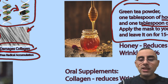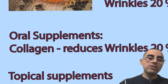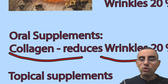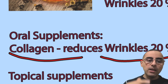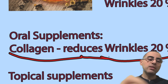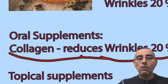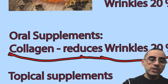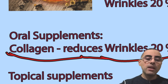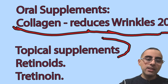Among supplements, the most evidenced is collagen. Collagen reduces wrinkles by around 20%. As an oral supplement, you drink it, and it is effective because collagen is a protein and an important component of skin elasticity — collagen is what gives skin its elasticity.